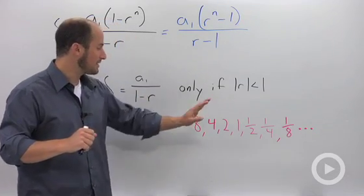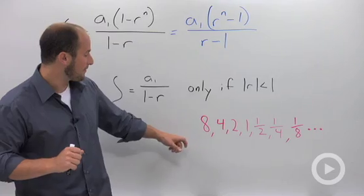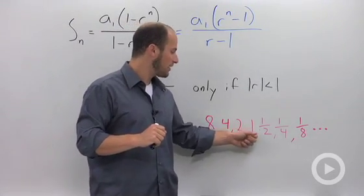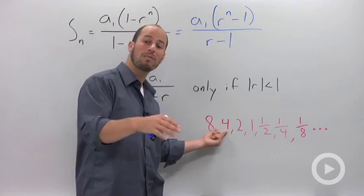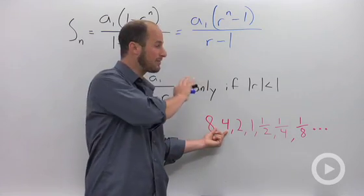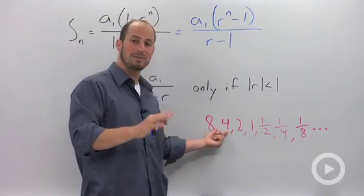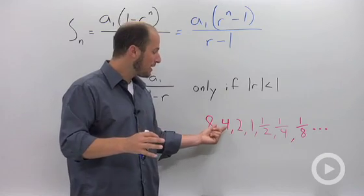And how that actually works is I've written out this sequence right here: 8, 4, 2, 1, 1 half, 1 fourth. And basically, what we're doing is dividing by 2 every time or multiplying by 1 half because we always have to multiply when finding our geometric sequences and series.